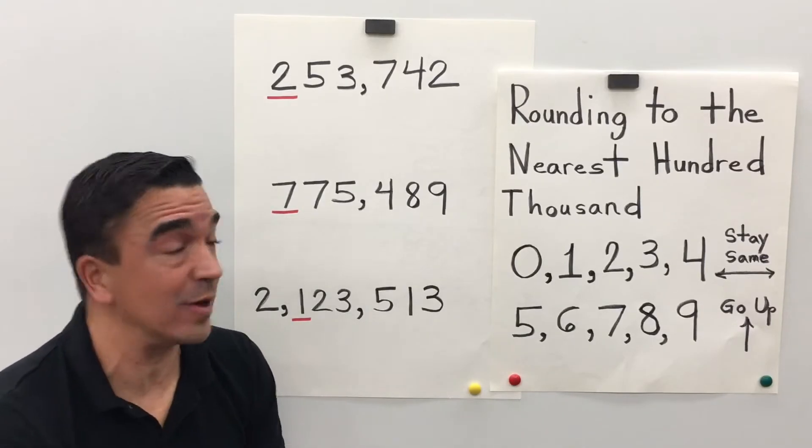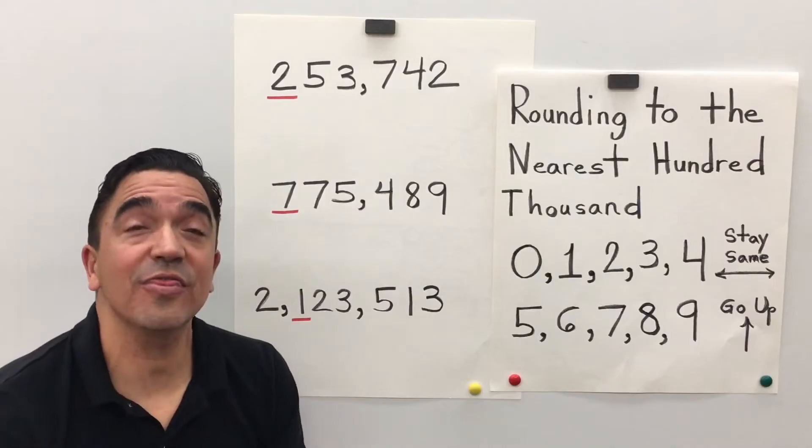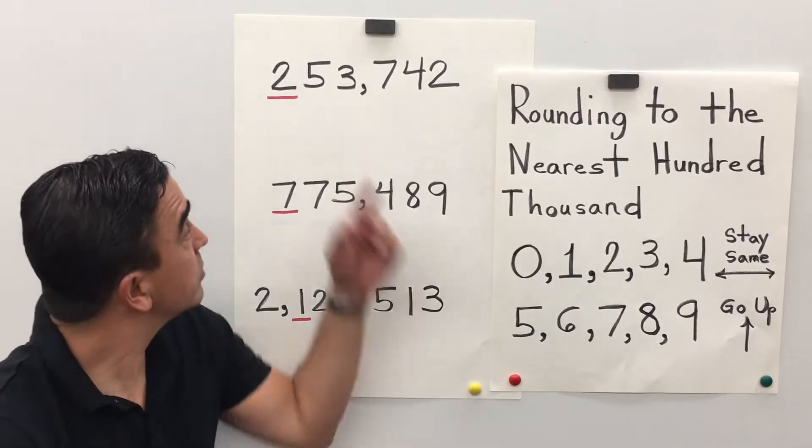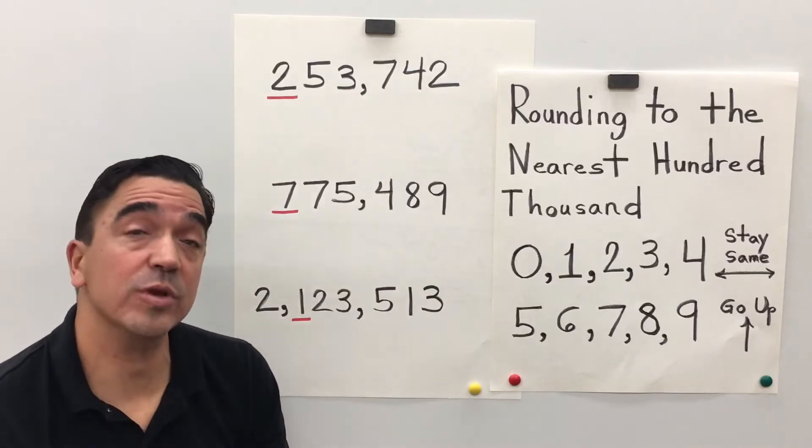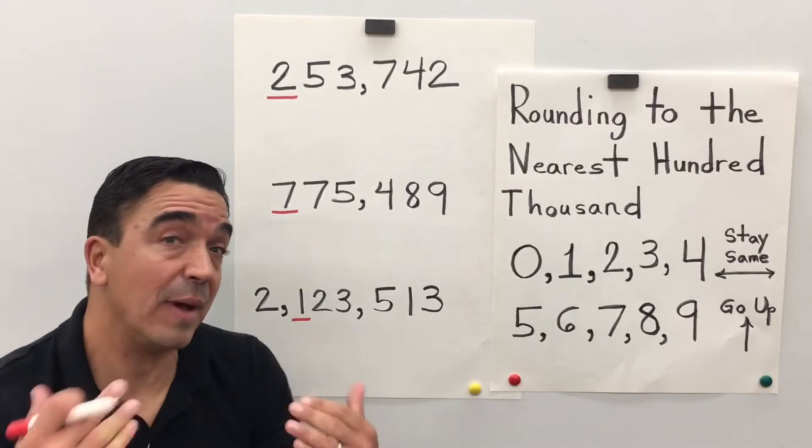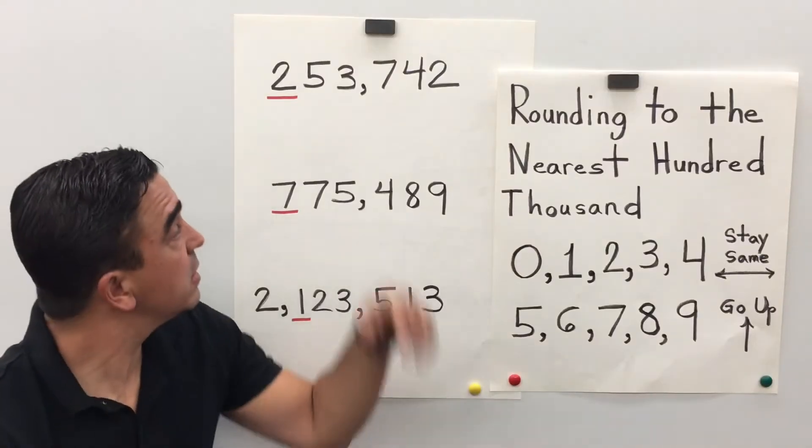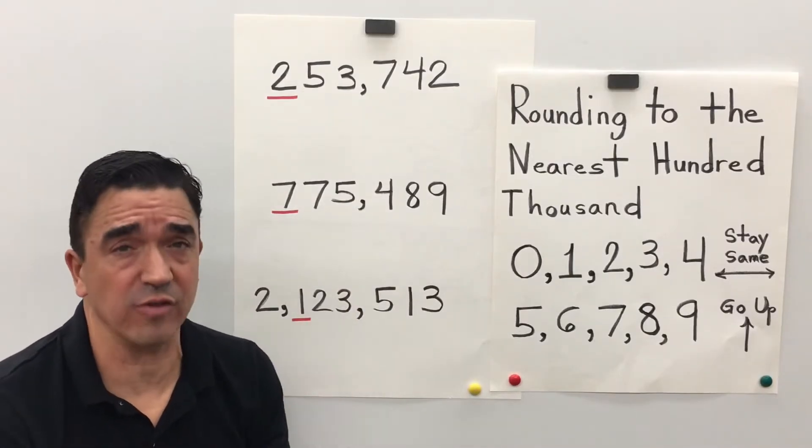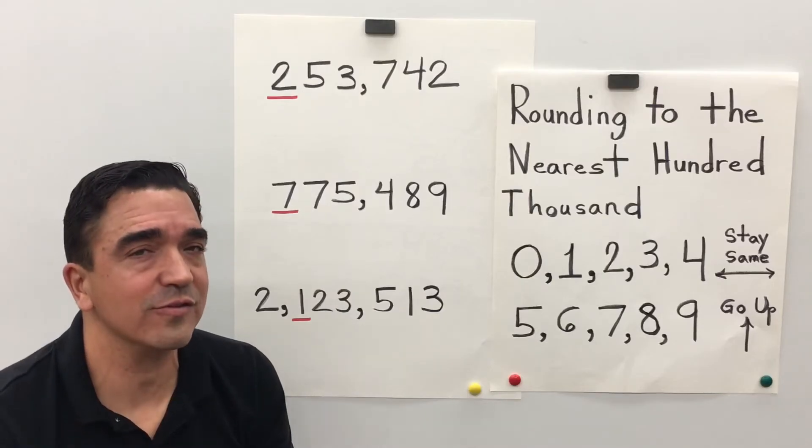Alright, let's get started on the first one. 253,742. I've underlined the 2 in the hundred thousandths place, but the 5 in the ten thousandths place is going to tell the 2 in the hundred thousandths place what to do. Let's look at this little strategy.